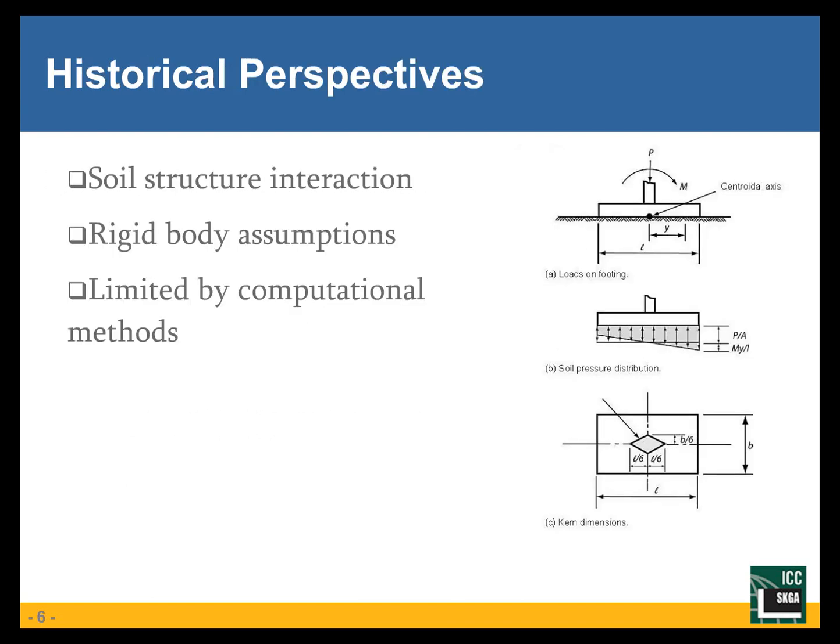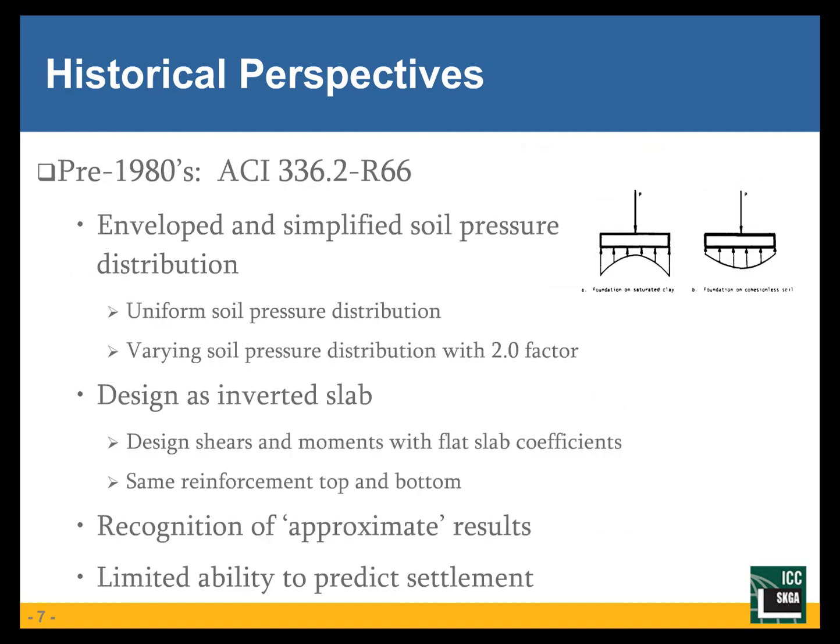From a historical perspective, I consider three categories: understanding of soil-structure interaction, assumptions about rigid body behavior, and limitations of the computational methods of the time. In the pre-1980s, Mat Foundations were typically analyzed using an envelope of simplified soil pressure distributions — a uniform pressure distribution and a varying one, sometimes with a factor of two difference between minimum and maximum pressures. Diagrams on the right illustrate what those might look like depending on soil type.